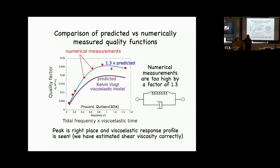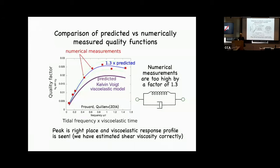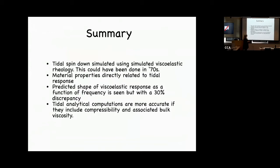It took a while to track down the source of the discrepancy. It turned out that most predictions for tidal dissipation assume the body is incompressible, but our simulated material is not. The 30% discrepancy comes from ignoring the bulk viscosity in the calculation. So tidal spin-down can be simulated directly using a simulated viscoelastic material — this could have been done in the 1970s; there's nothing hard about it, you can run it on a laptop. The predicted shape of the viscoelastic response was correct, with the 30% error later attributed to neglect of bulk viscosity in the theory.